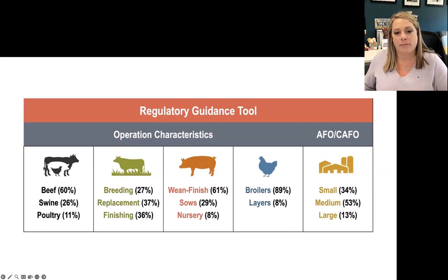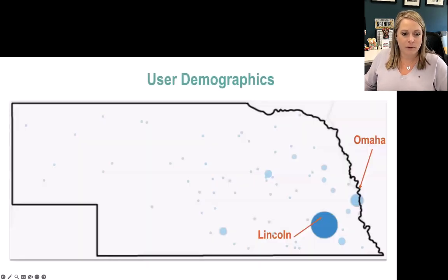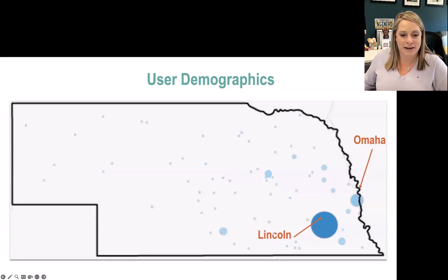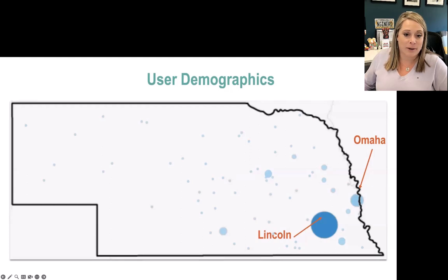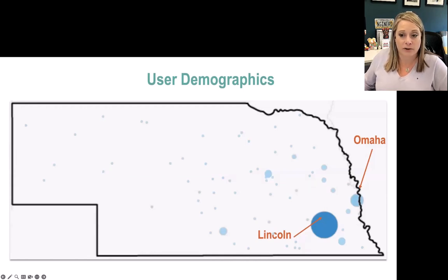With poultry, broiler operations are what we're mainly seeing in Nebraska. There's also a breakdown on the right of the size of operation evaluated in the Regulatory Guidance Tool. The user demographics map shows considerably more density in the eastern part of the state, which is the more populated area. We've seen quite a bit of usage near Lincoln and Omaha on the outskirts, and those users are likely primarily community members and regulators rather than producers.